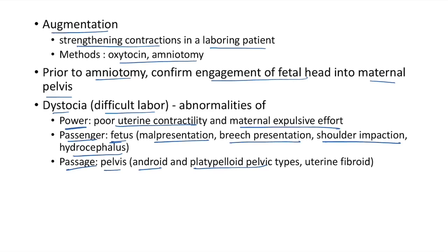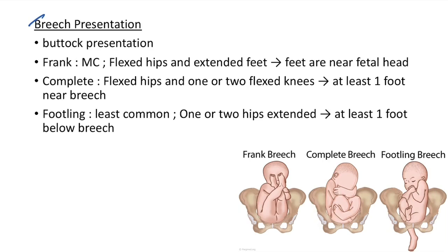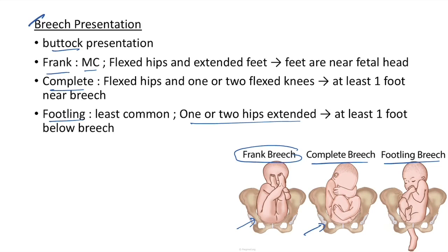Breech presentation (buttock presentation): types are frank breech (most common — hips flexed, knees extended, feet near head), complete breech (hips and knees flexed, feet near breech), and footling breech (least common — one or two hips extended, at least one foot below the breech). Management: for full-term breech in a laboring patient, usually C-section. Other options: external cephalic version and trial of vaginal delivery (should be done before full term).